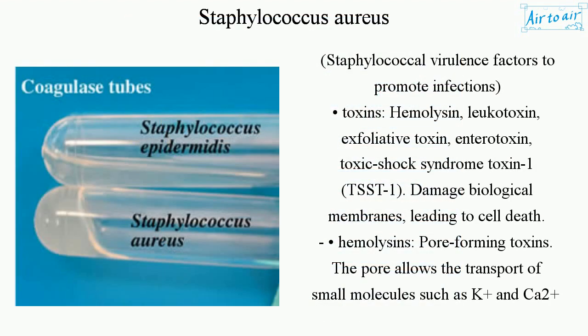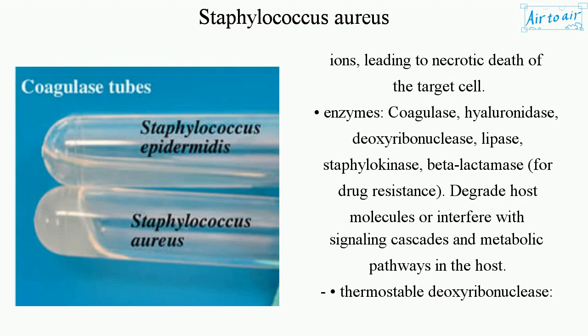Staphylococcal virulence factors to promote infections — toxins: hemolysin, leukotoxin, exfoliative toxin, enterotoxin, toxic shock syndrome toxin 1 (TSST-1). These damage biological membranes, leading to cell death. Hemolysins are pore-forming toxins; the pore allows transport of small molecules such as K+ and Ca2+ ions, leading to necrotic death of the target cell.